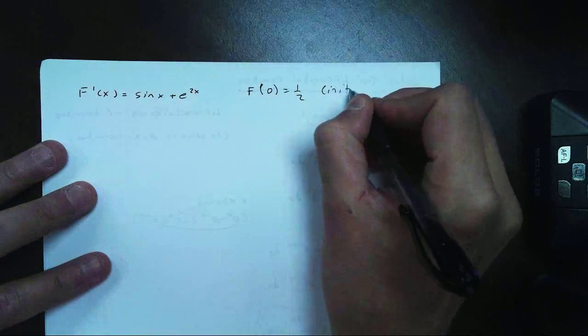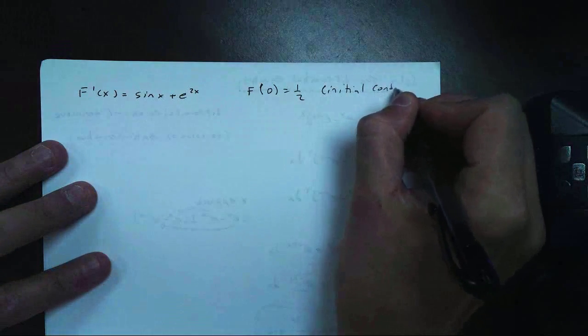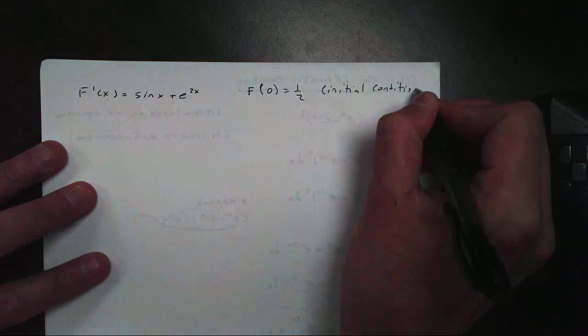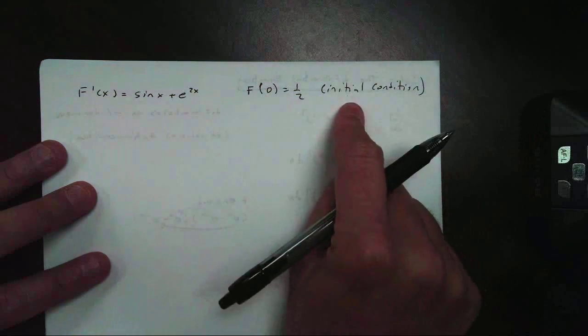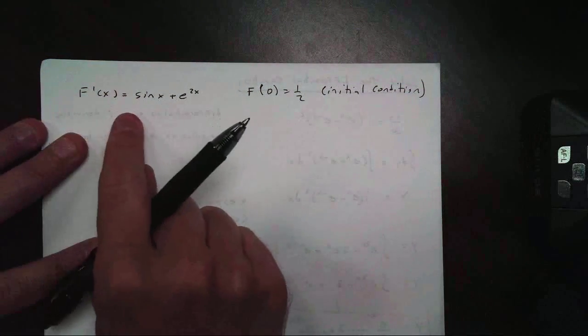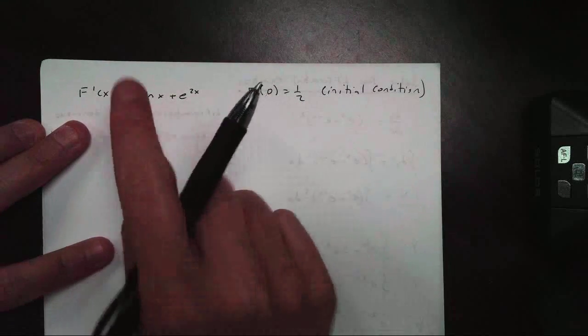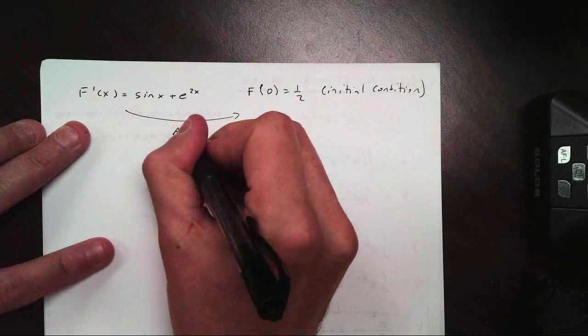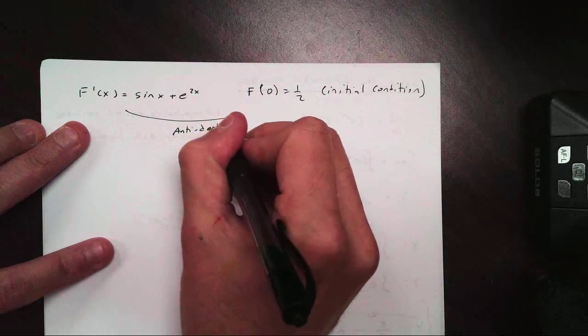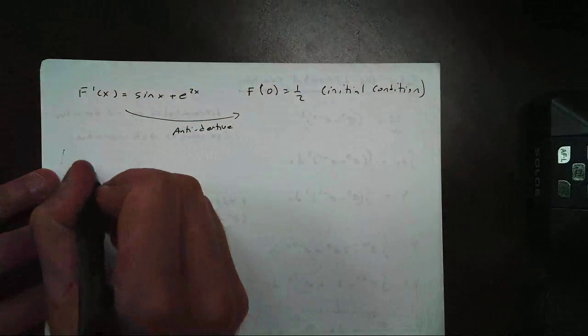They're giving us what's called an initial condition. Now, any time they give us an initial condition, we're going to have to solve for something. So let's take a look here. We're given the derivative, looking for the value. Given the derivative, I need to find the value. I need the antiderivative.